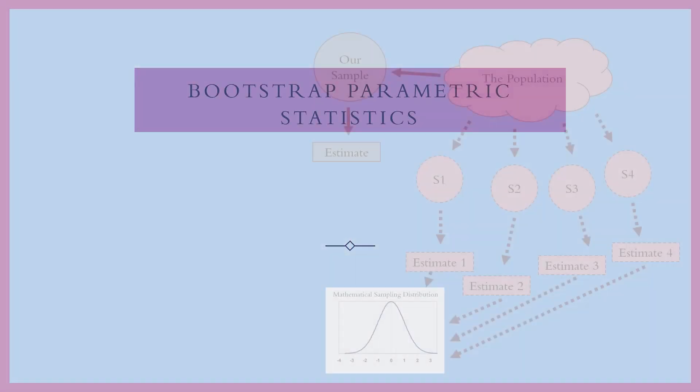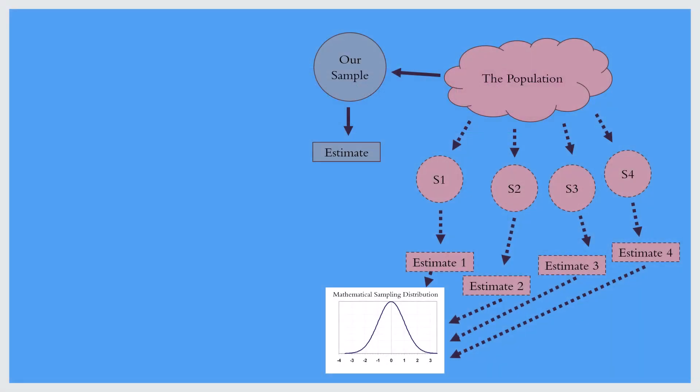Now let's look at bootstrap parametric statistics. Again we have a sample and again we create estimates from that sample, but now we imagine that we have a population that adheres to some mathematical form such as a normal distribution or a uniform distribution, and we use the estimates from our sample as the parameters for that distribution. So in essence we're estimating a population. For example, if we have a mean and standard deviation from our sample and we're imagining a normal distribution, we use the sample mean as the population mean parameter and the sample standard deviation as the population standard deviation parameter.